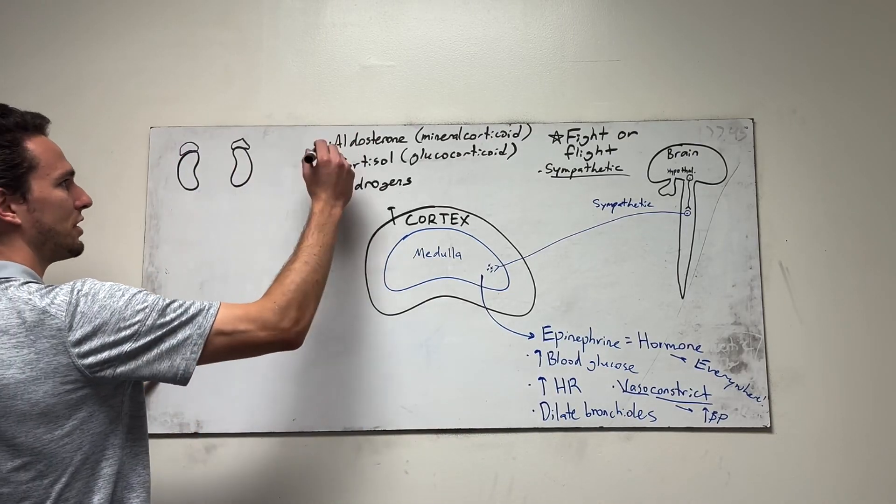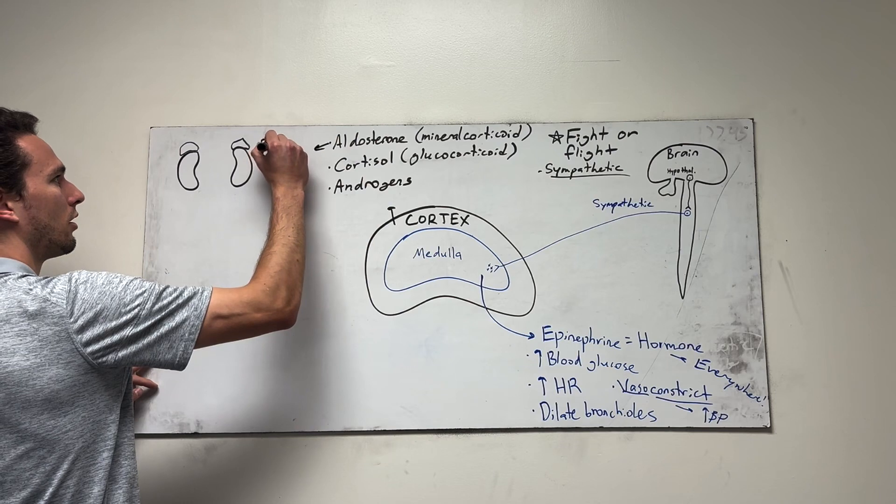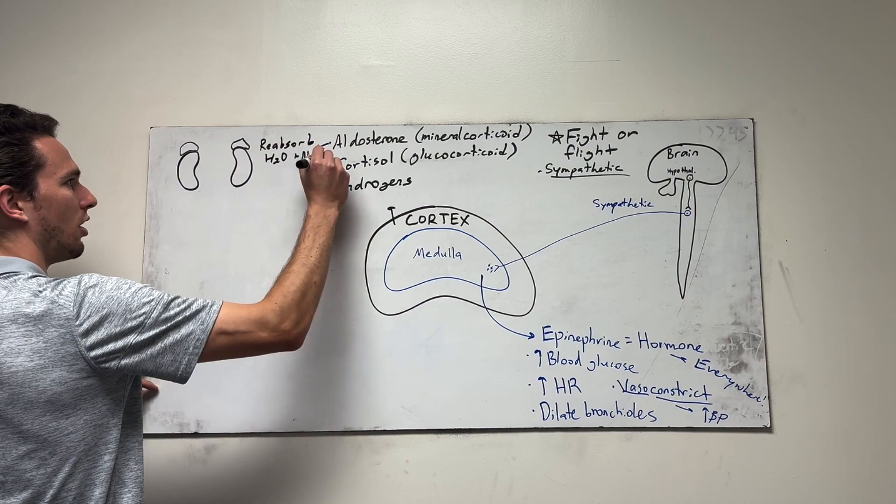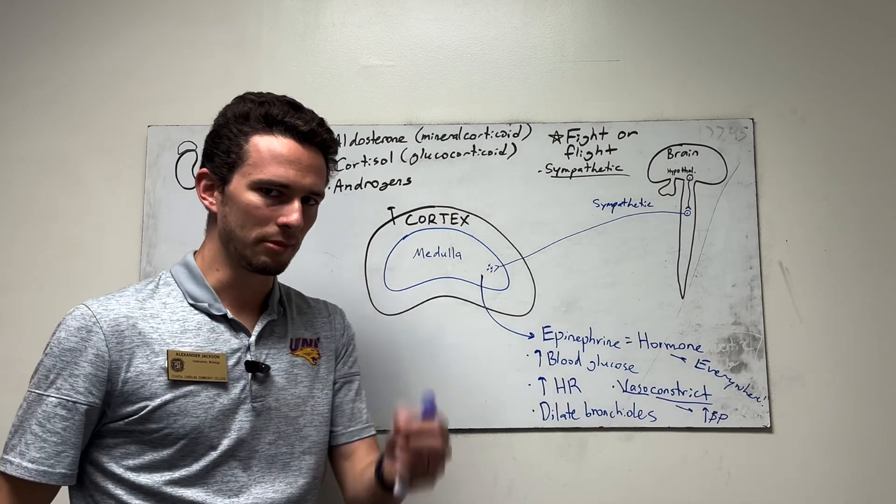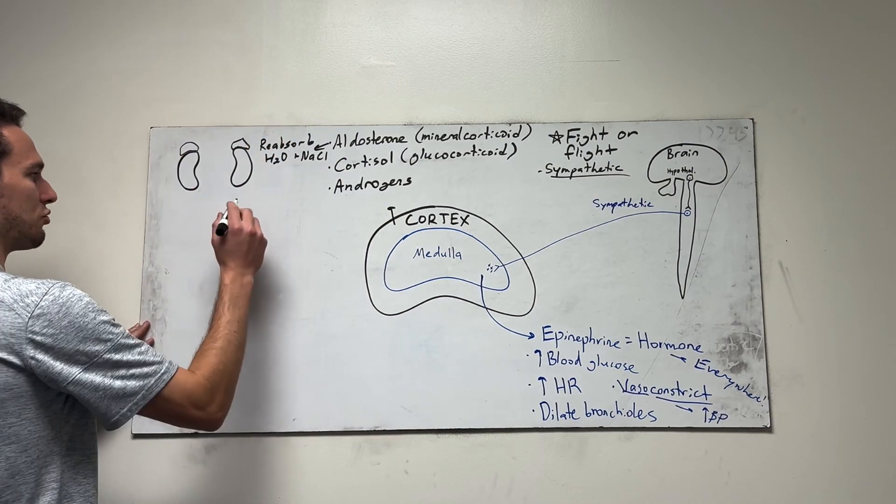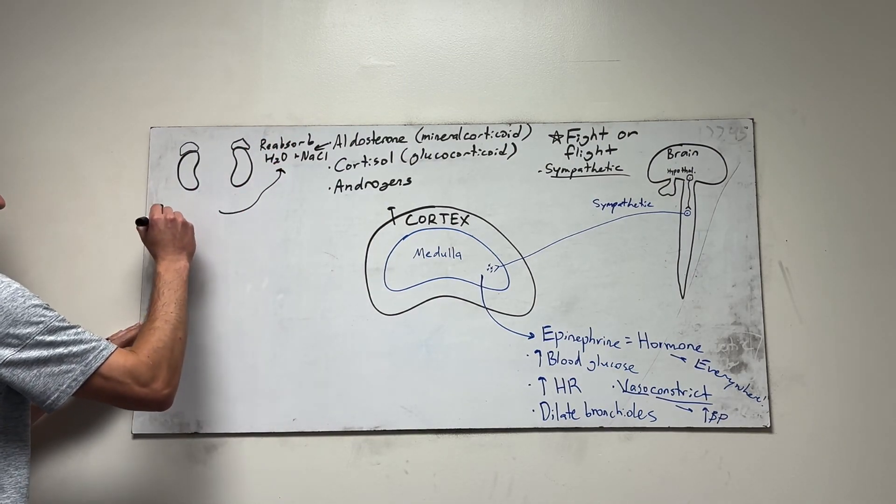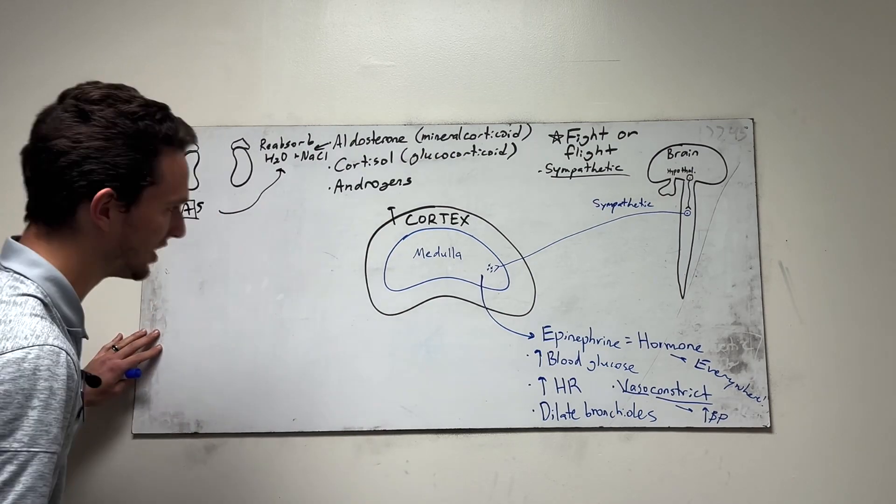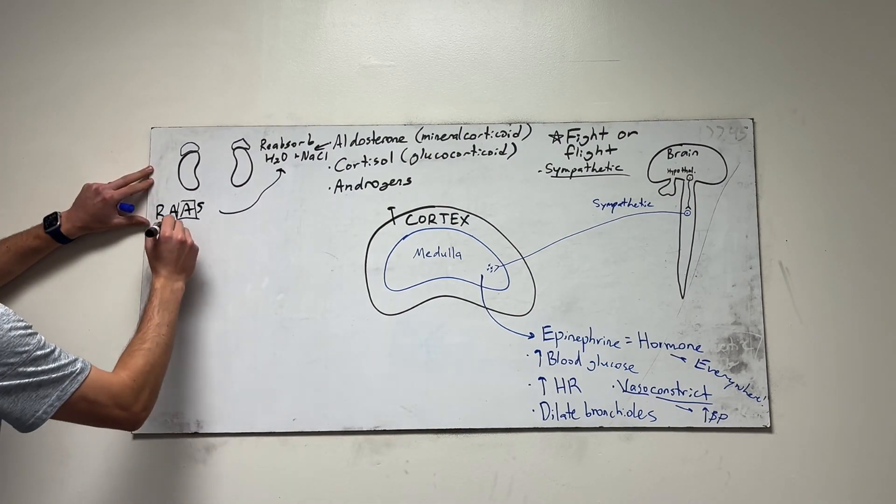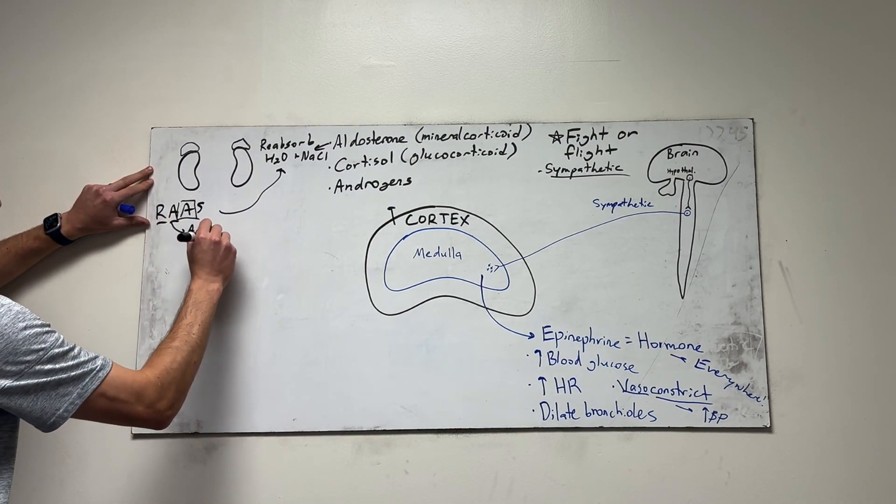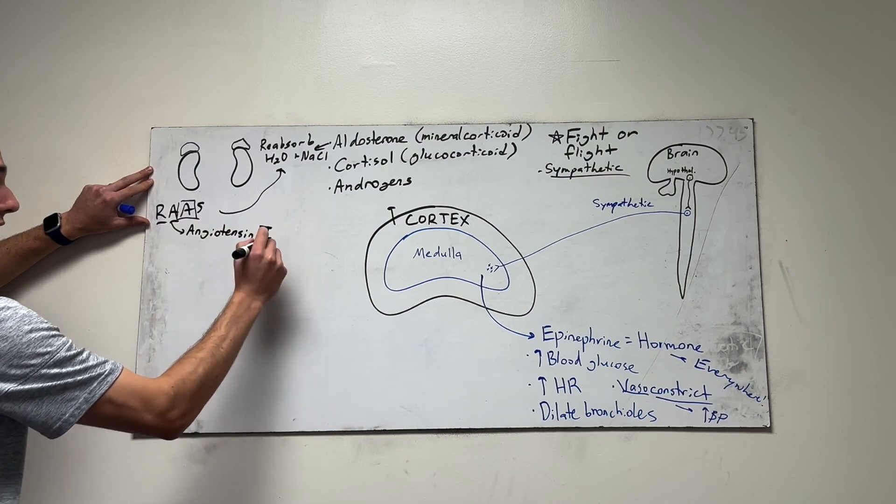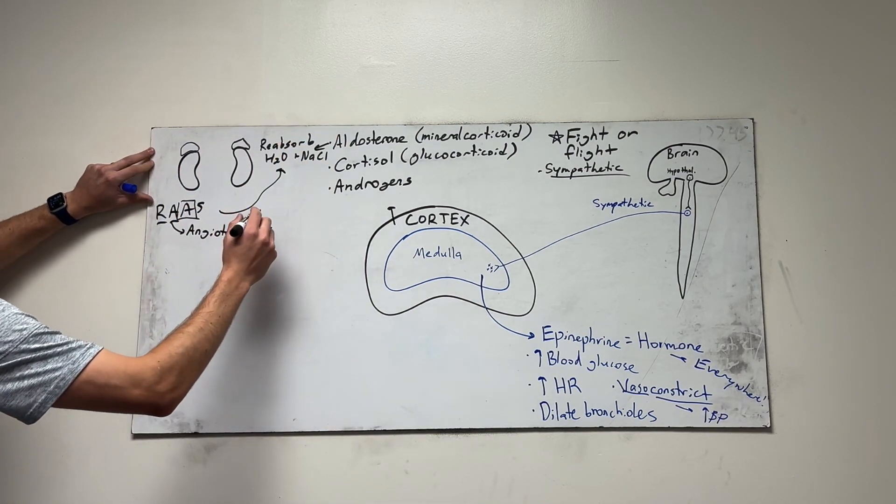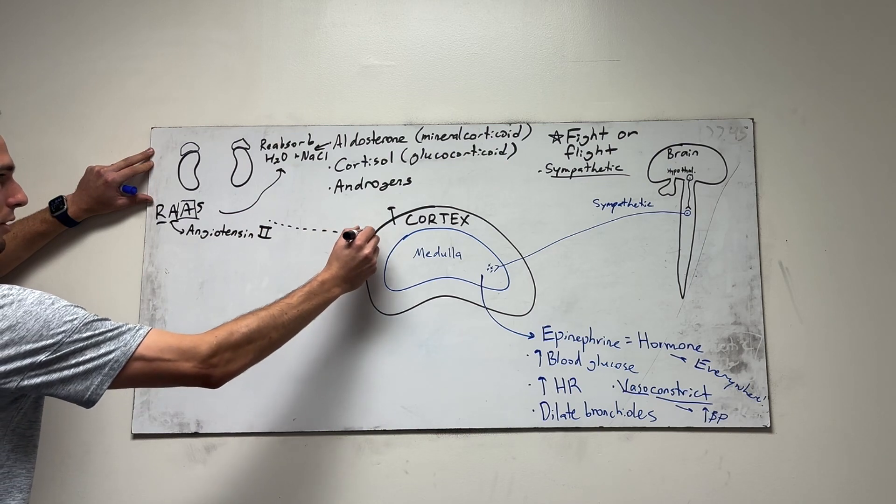The first one, aldosterone. Aldosterone, this is going to help reabsorb water and sodium chloride, so salt. Now, why would we want to reabsorb water and salt? Well, aldosterone is released in response to, you may have heard of the RAS system, the renin-angiotensin-aldosterone system. So what's interesting is, and this system is triggered, angiotensin-2 will be released. And I do have a video on the RAS system if you want to watch that on YouTube. But when angiotensin-2 is released, it makes a wide variety of effects and it actually tells the adrenal cortex to begin producing aldosterone.